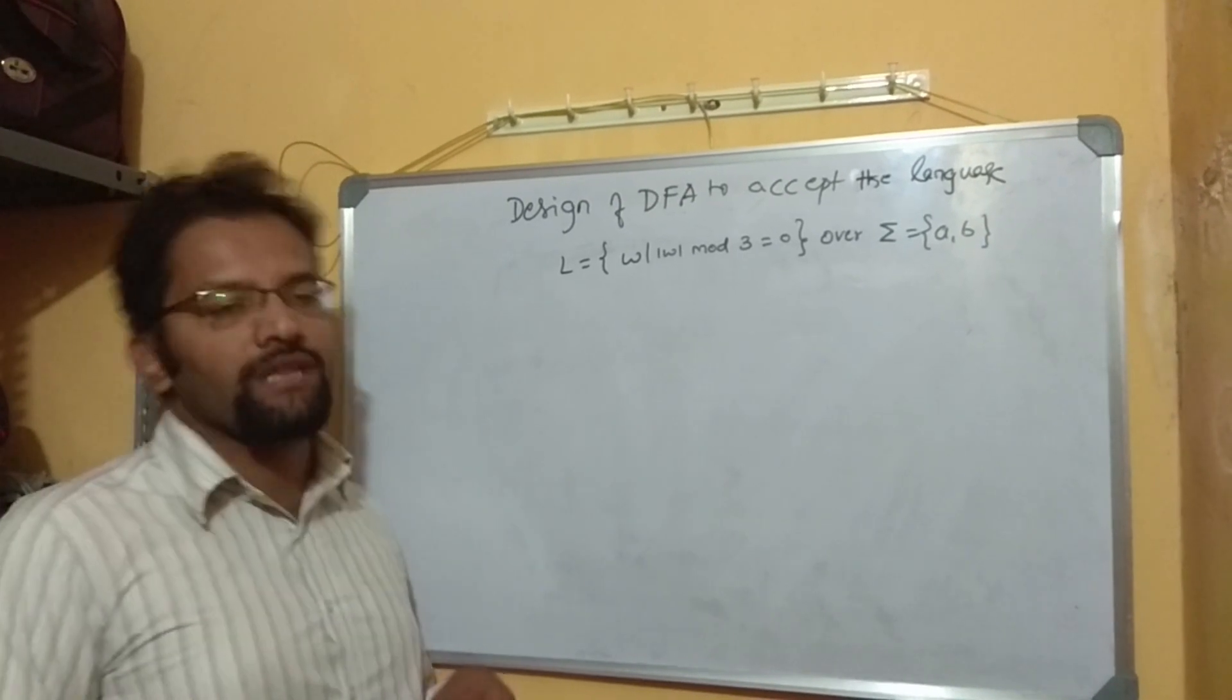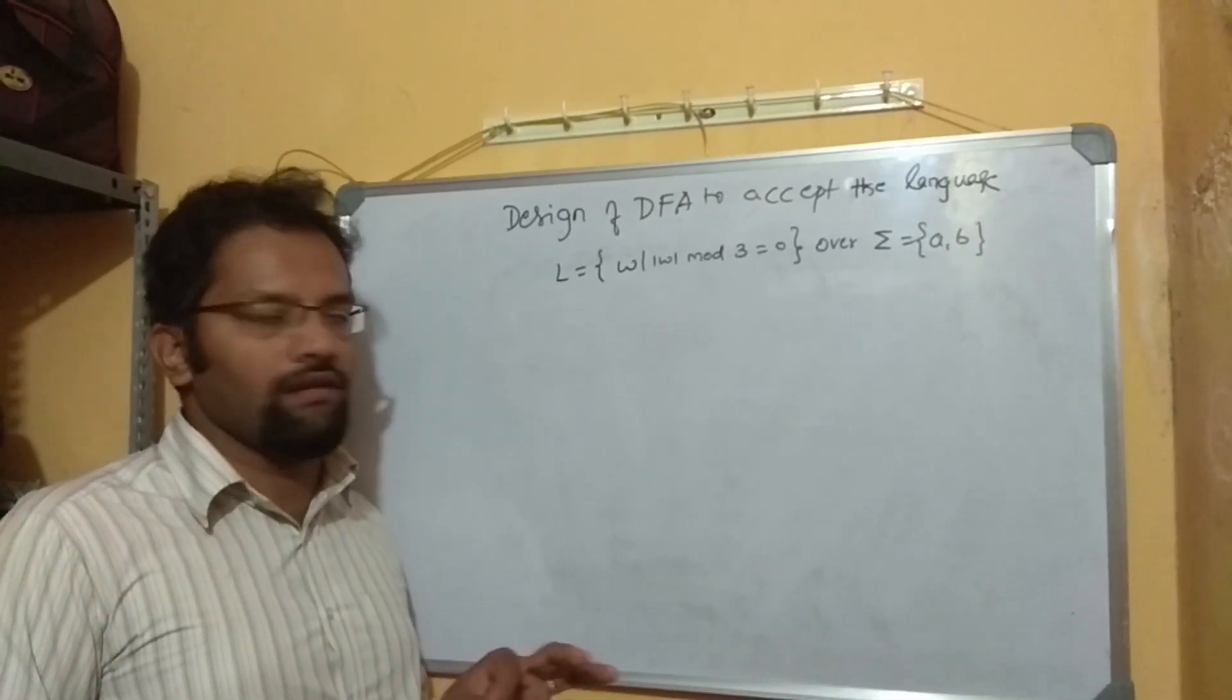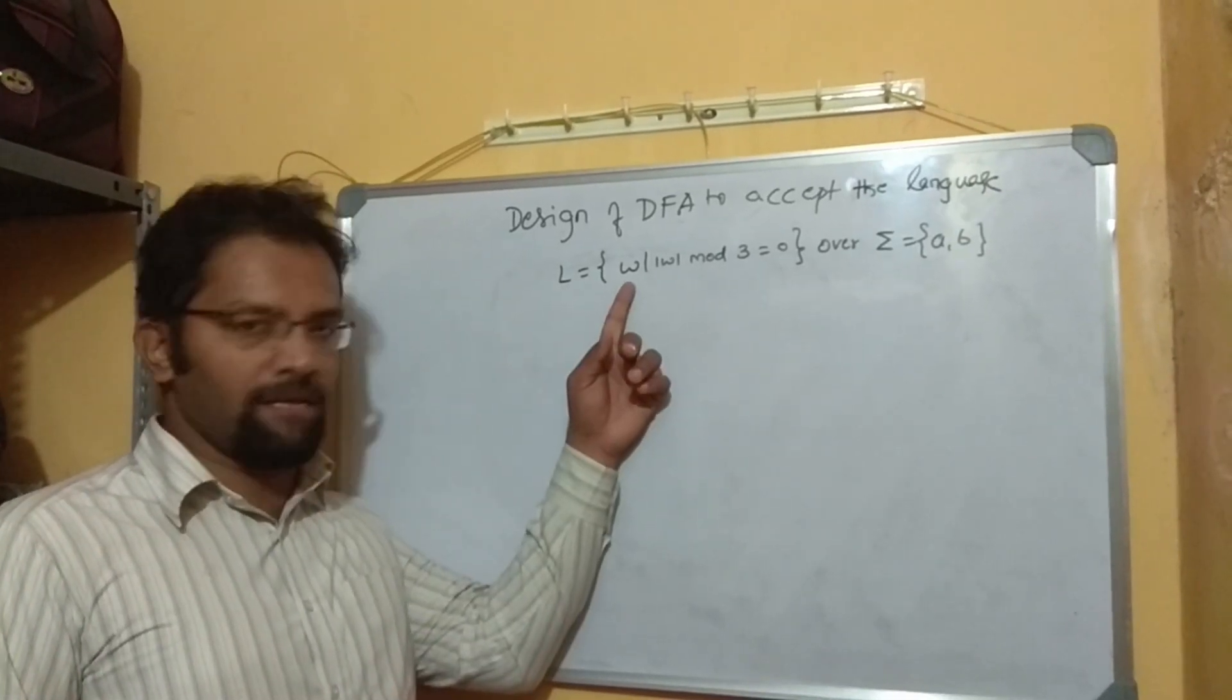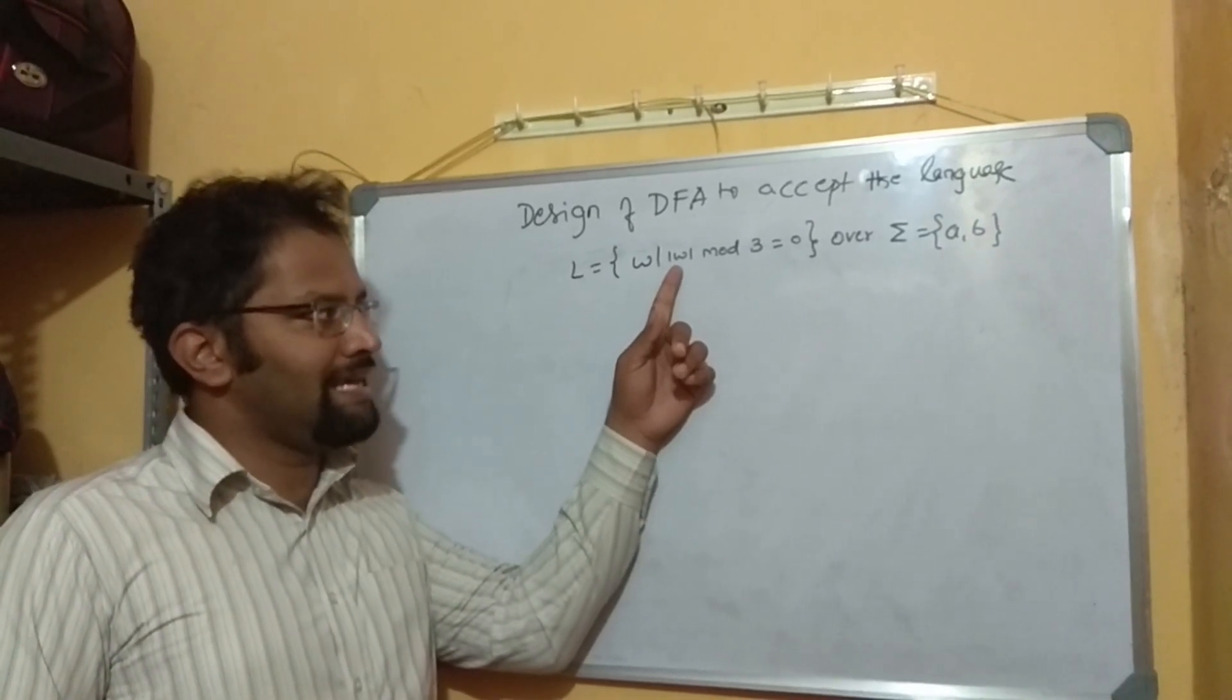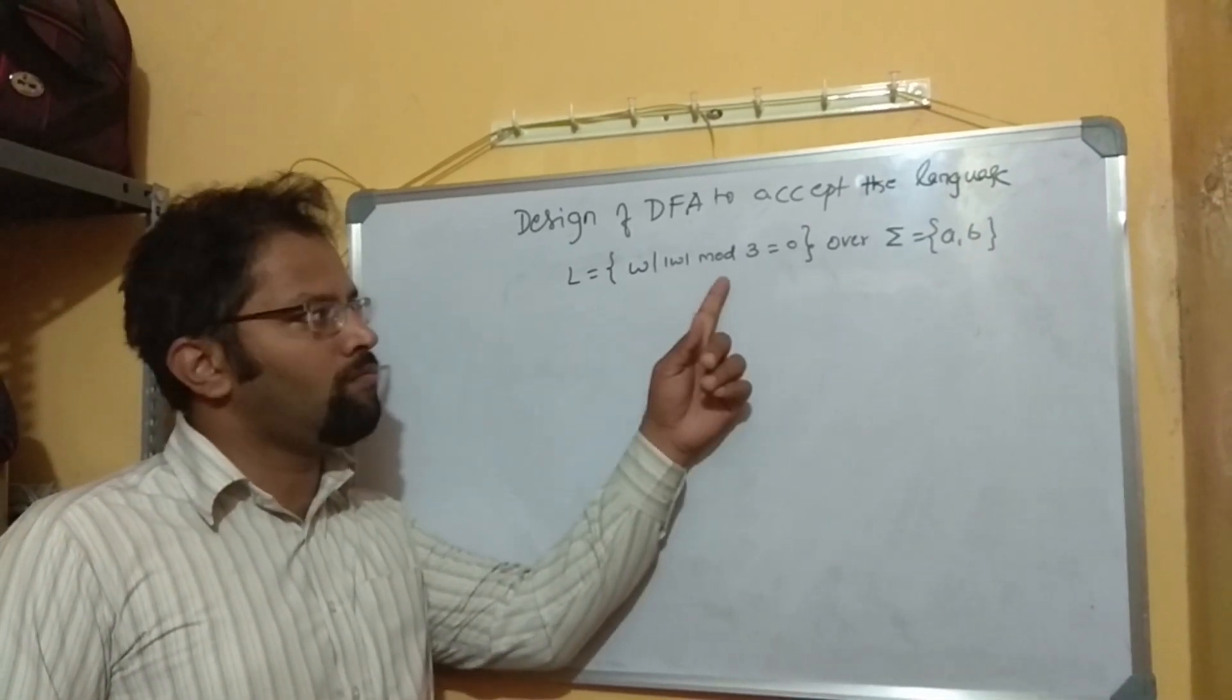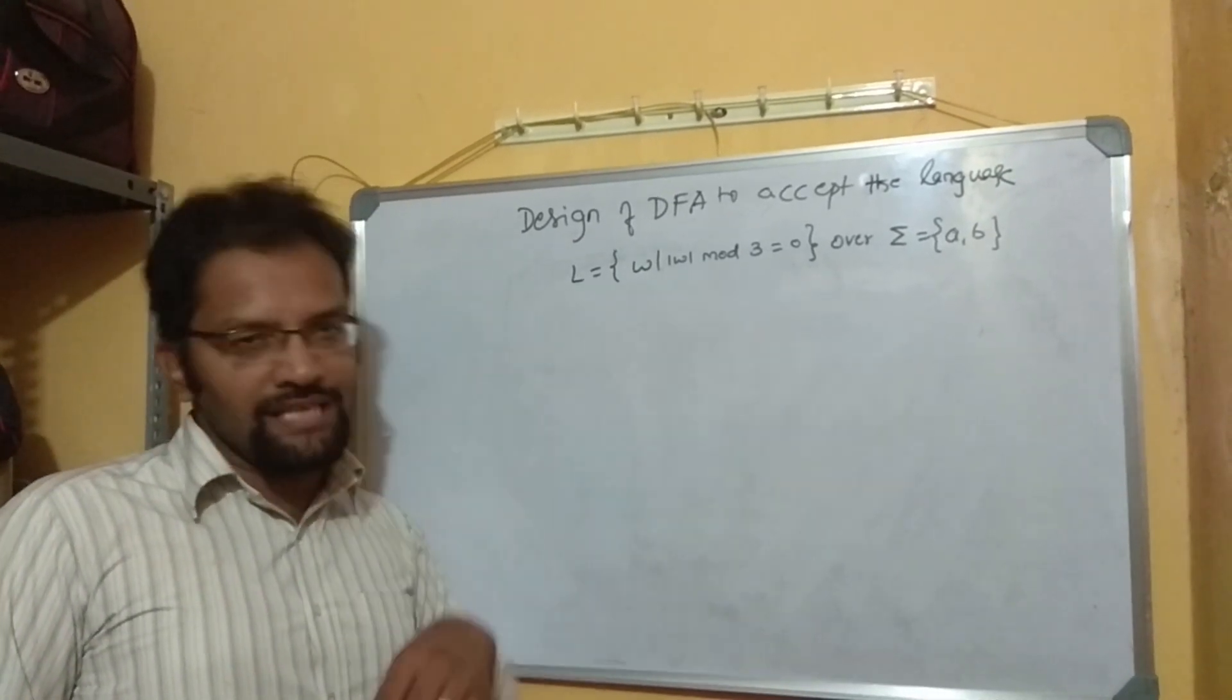Check out the question properly. It says, design a DFA to accept the language L such that W, this indicates such that, number of symbols in W mod 3 equals 0 over sigma is AB.